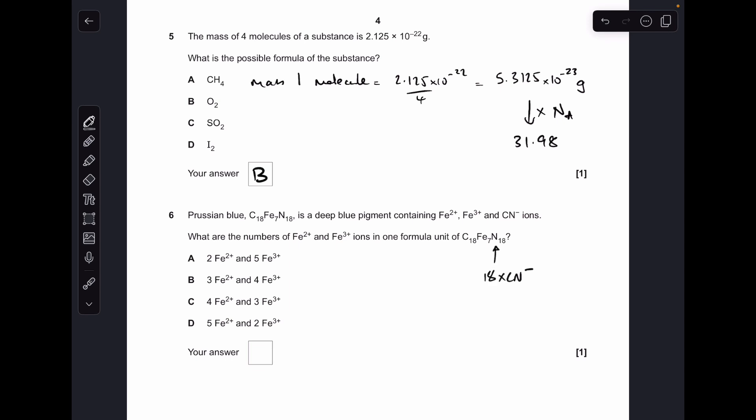Moving on to number 6. The formula unit is C₁₈Fe₇N₁₈. The fact that there's 18 ends means there's 18 of those CN⁻ ions. Basically we need an 18+ charge from the ions. We need to see what combination of iron ions gives us 18+. Obviously B must be the right answer because that's the 18+ charge.